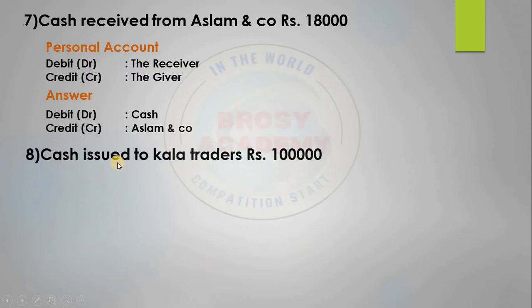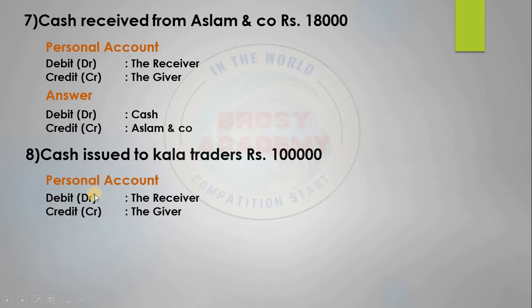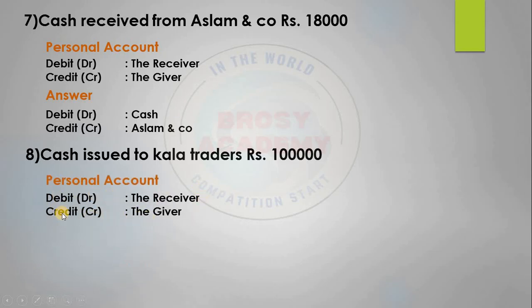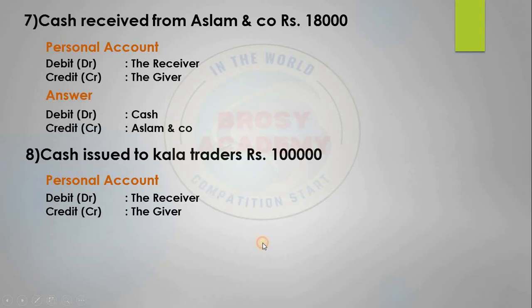Cash issued to Color Traders. Cash transaction involves personal accounts. Personal accounts rule: debit receiver, credit giver. Color Traders is the receiver. So debit Color Traders, credit cash.